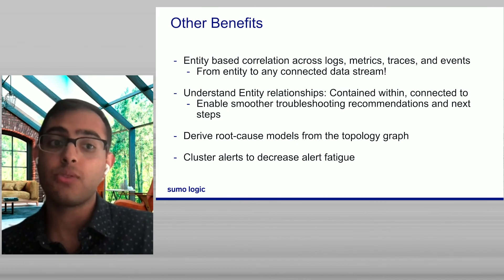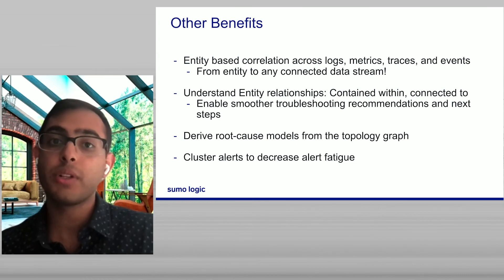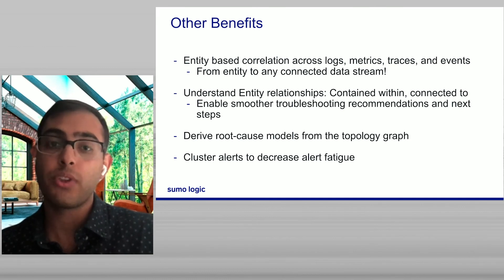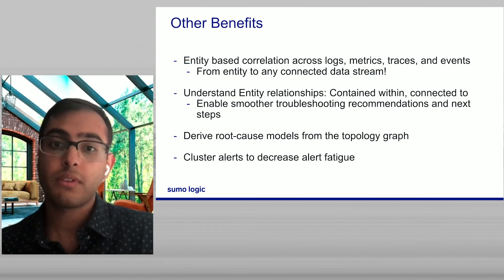Some of the other benefits you get by using entity-based correlations and entity-based systems is you get seamless integration across logs, metrics, and traces. From any entity, you can get to any data stream. And this gives you the flexibility of not having to spend time translating. Once you understand entity relationships, how they're contained within, how they're connected to, we can provide smoother recommendations about where the next step might be. Whether it's due to a downstream service, whether it's due to an infrastructure problem, all of these connections become much more visible when you have an entity-based model. And finally, to really understand root cause, you need to have a deep topology graph that actually models out the interactions between different components, enabling the system to actually understand how a spike in one given component or an unhealthiness in one given component might yield unhealthiness downstream.